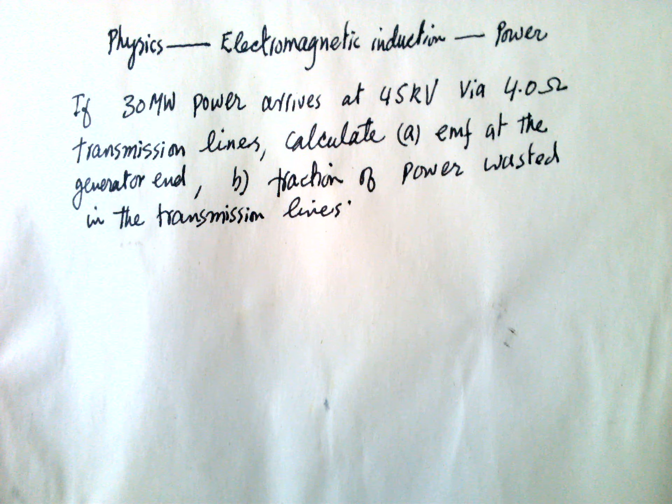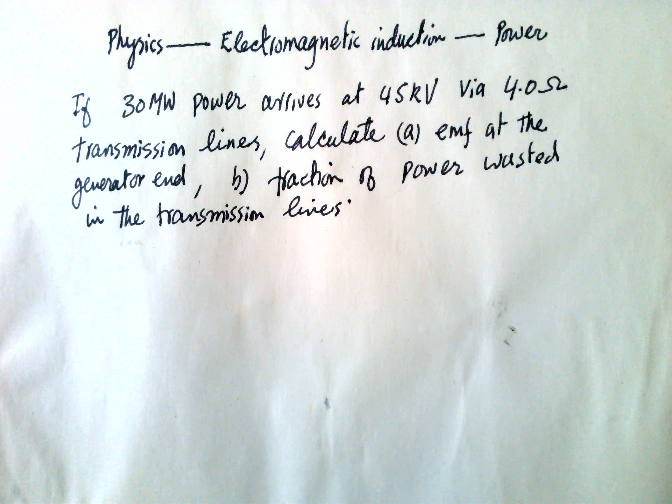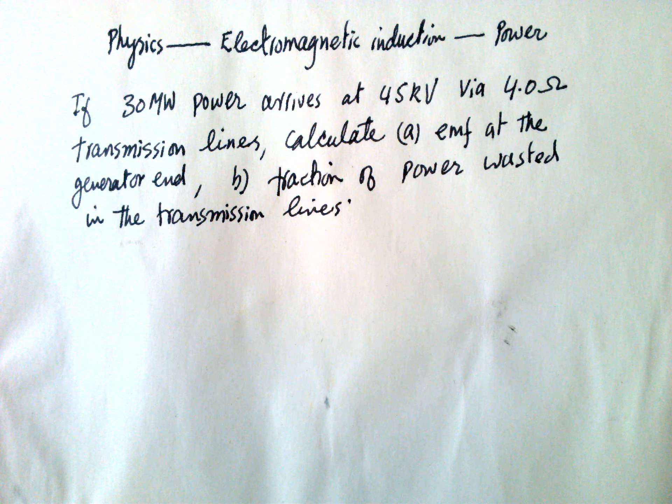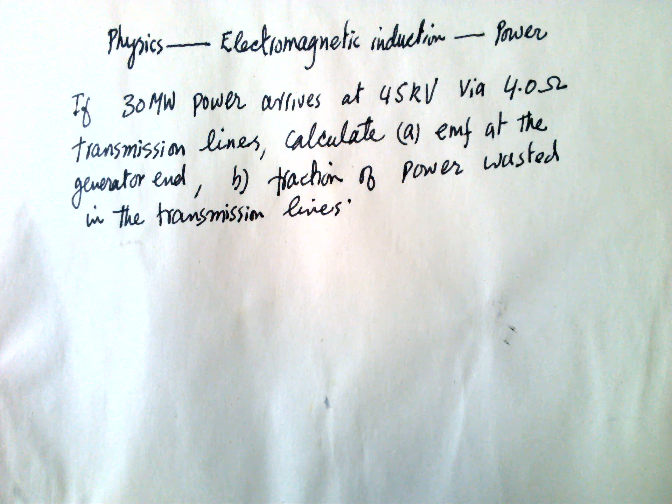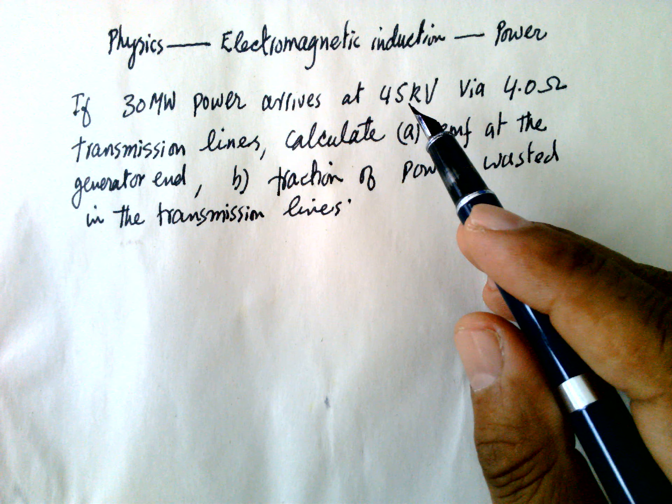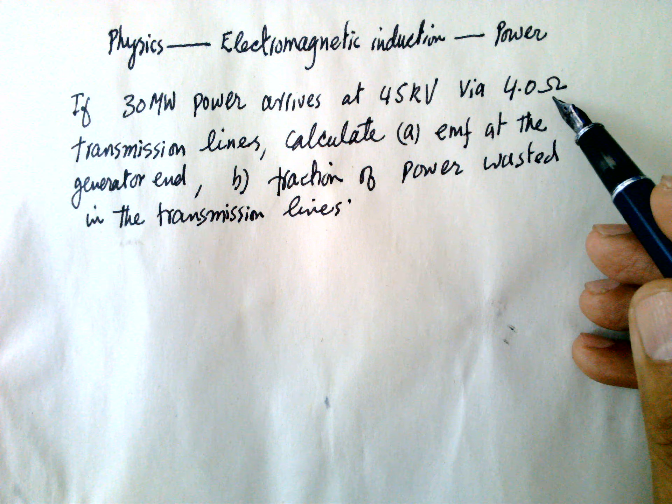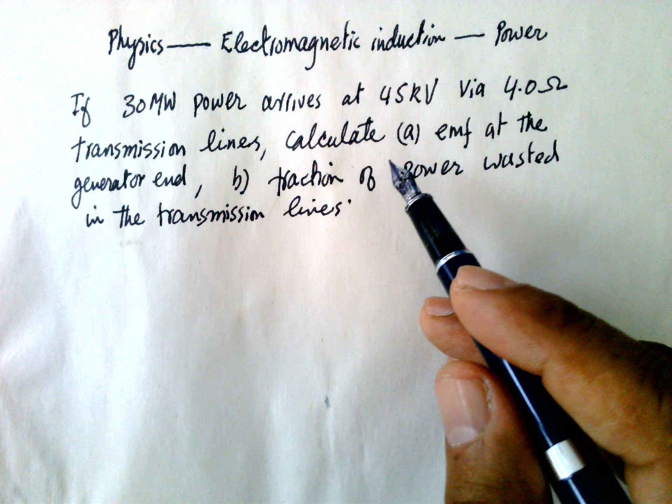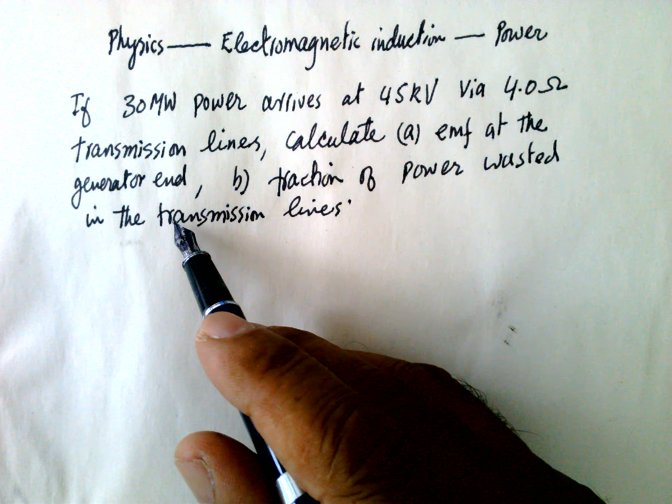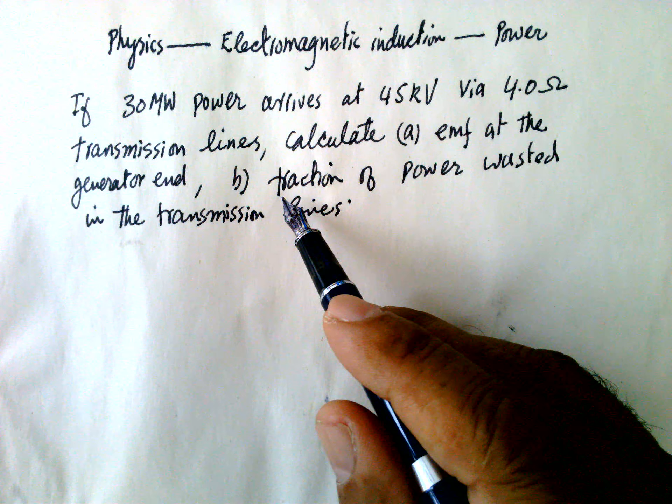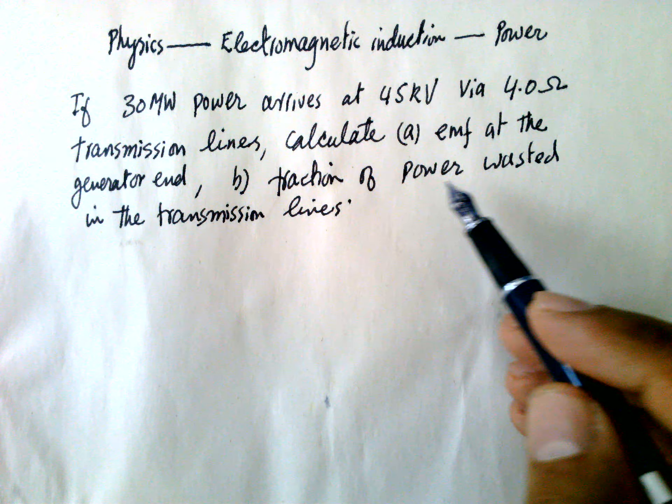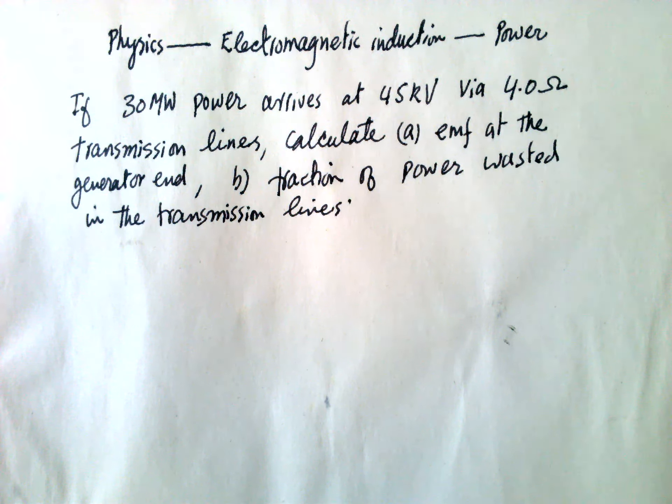Hello, physics electromagnetic induction power problem. A 30 megawatt power arrives at a city at 45 kilovolts via a 4 ohm transmission line. Calculate (a) EMF at the generator end, (b) fraction of power wasted in the transmission lines.